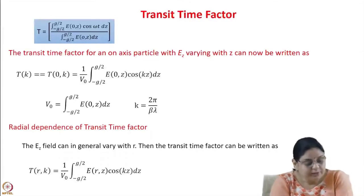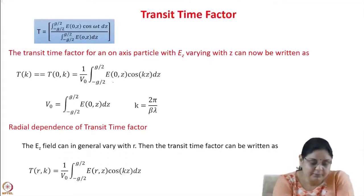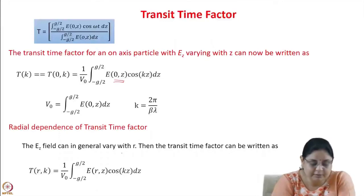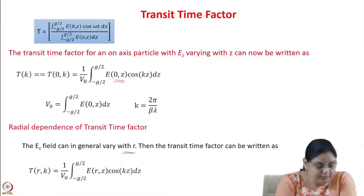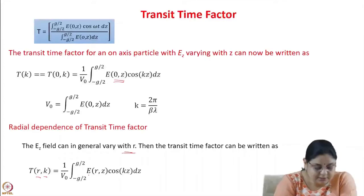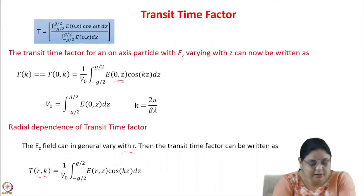The general formula for the transit time factor at R = 0 with Ez varying with z is T = (1/V₀)·∫₋g/₂^g/₂ E₀(z)·cos(kz)dz, where the voltage V₀ = ∫₋g/₂^g/₂ E₀(z)dz and k = 2π/βλ. For a general radial dependence, the electric field varies with r as well. Then the transit time factor for a general r is obtained by replacing E₀(z) with E(r,z) in the expression.